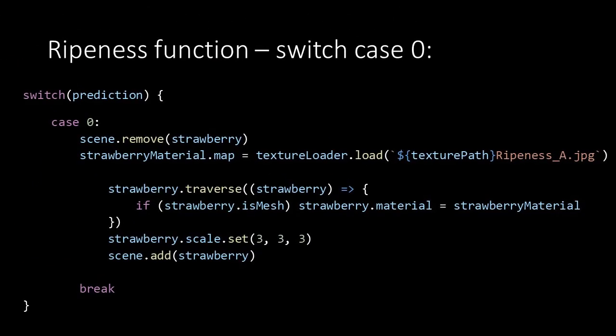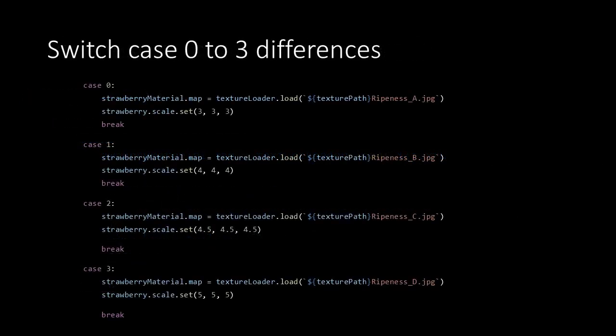After the traverse function we set the scale for the X, Y and Z dimensions to 3 and add the updated strawberry to our scene. For each ripeness we not only change the texture but also the scale, from 3 to 4 to 4.5 to 5. These sizes are roughly taken from the image from which we also retrieved the colors for the ripeness phases. Then we end the case with the break keyword. The cases for predictions 1, 2 and 3 are exactly the same — the only thing that's unique in each case is the image used for the material and the size.